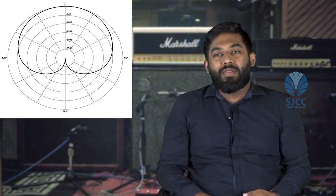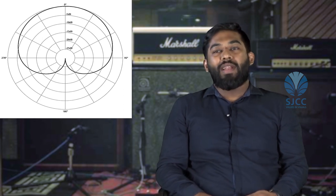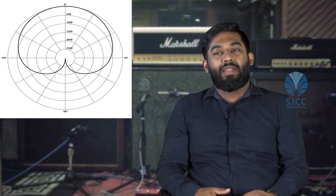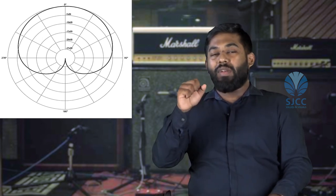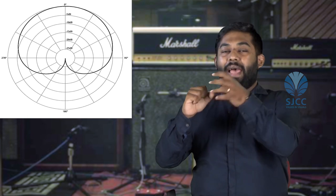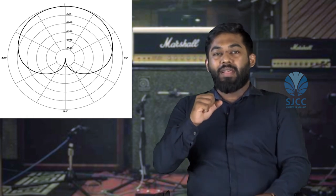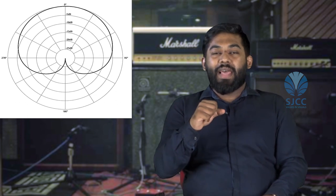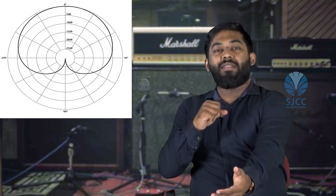Cardioid microphones. From the name cardio, we can understand that it gets its name from the resemblance to the heart. A cardioid microphone is more sensitive to sound in the front and rejects sound at the rear. This is why it's a good mic to use in live situations where the monitor is right in front — you can reject the sound coming from the monitor while still capturing the singer.